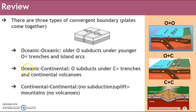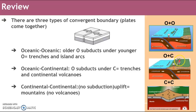The other type of convergent boundary is oceanic-continental, and that's when oceanic crust, which is denser, comes towards continental crust and it is the one to subduct. When this happens we'll see trenches forming as well, but we'll also see volcanic mountains along the coast — continental volcanoes. Our example of this was the Andes mountain range along South America. The Nazca oceanic crust subducts underneath that to create volcanic mountains on the coast.